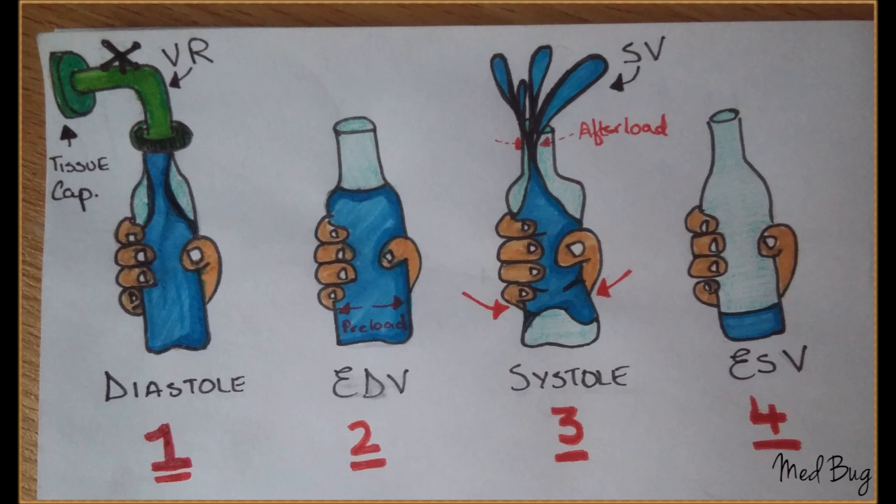Now in stage two, the volume of water present by the end of diastole is the end-diastolic volume. This volume produces a load on the walls of the bottle which is called the preload.